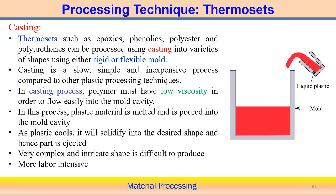The first technique for thermosets is the simple casting process. Different types of thermosets such as epoxies, phenolics, and polyester can be used. In casting, a variety of shapes can be produced using either very rigid or flexible molds. Casting is a relatively slow process compared to other manufacturing processes, but it is simple and relatively inexpensive.